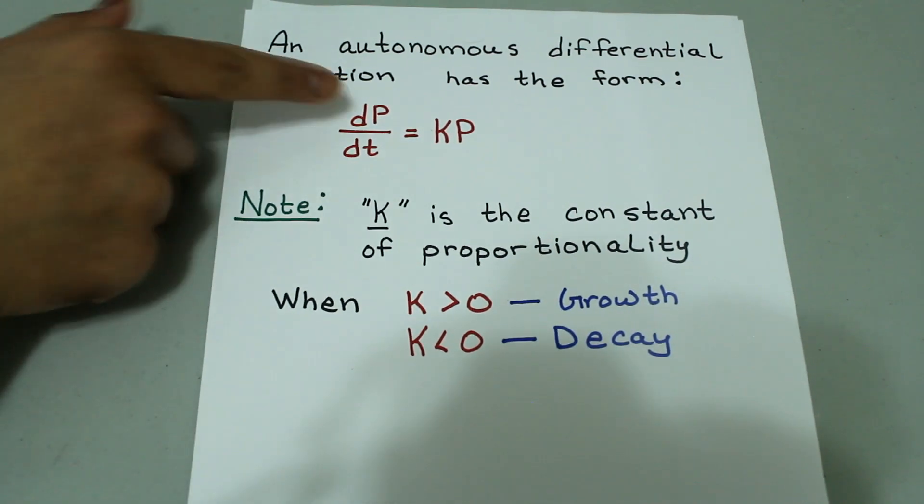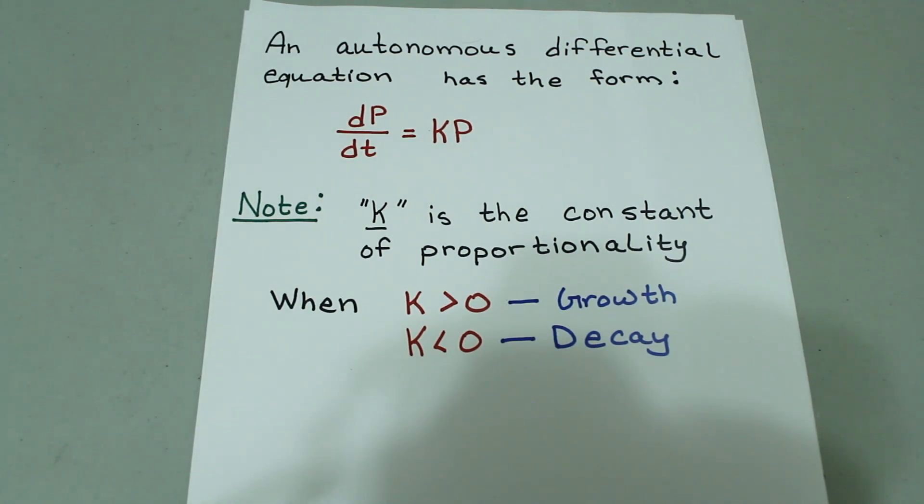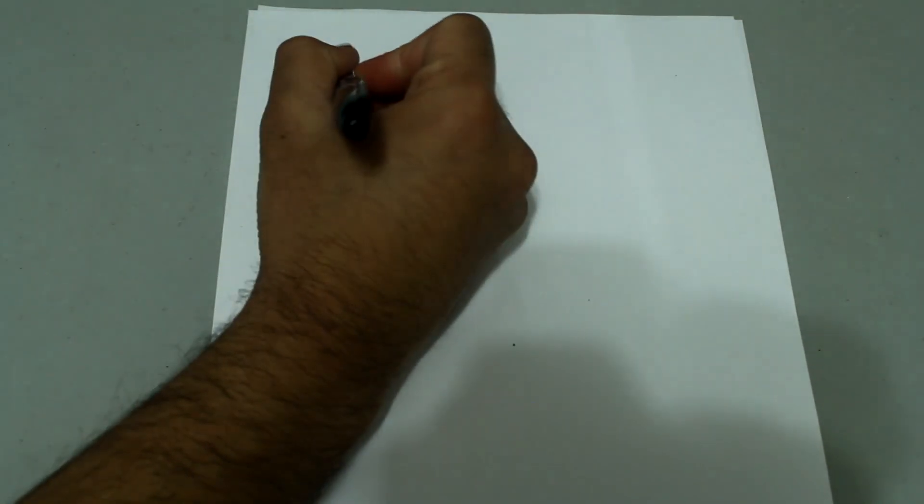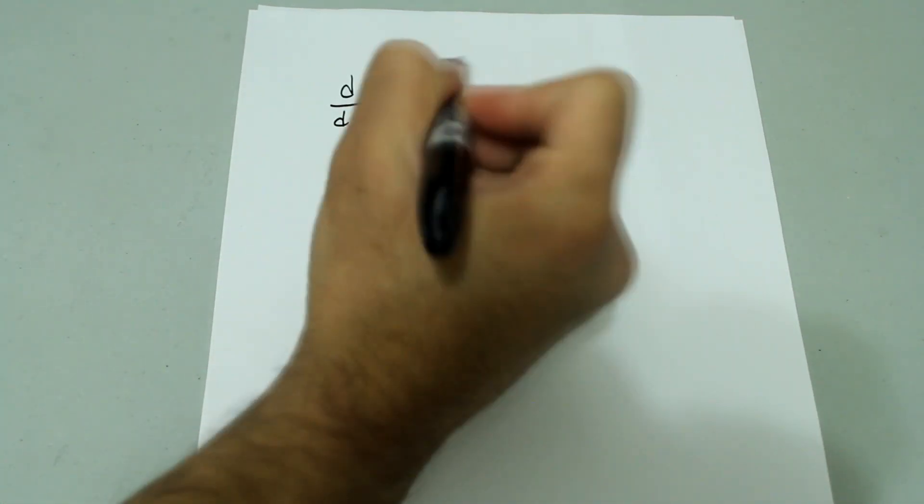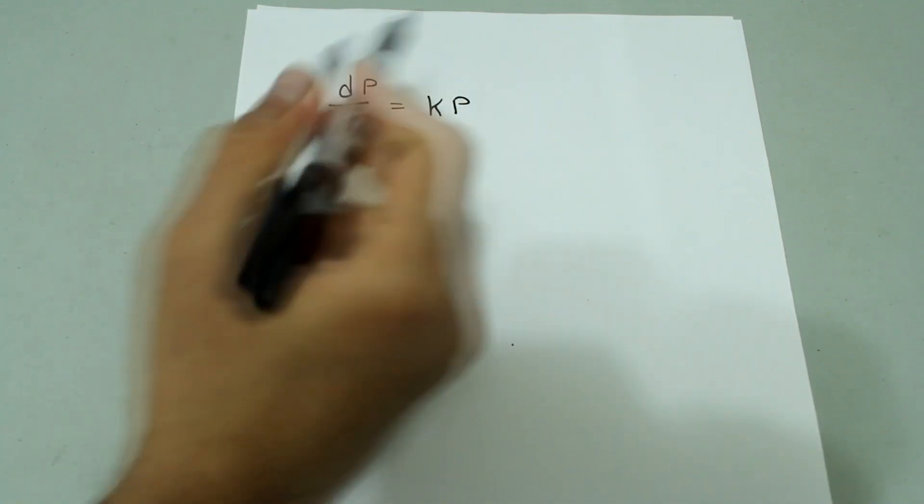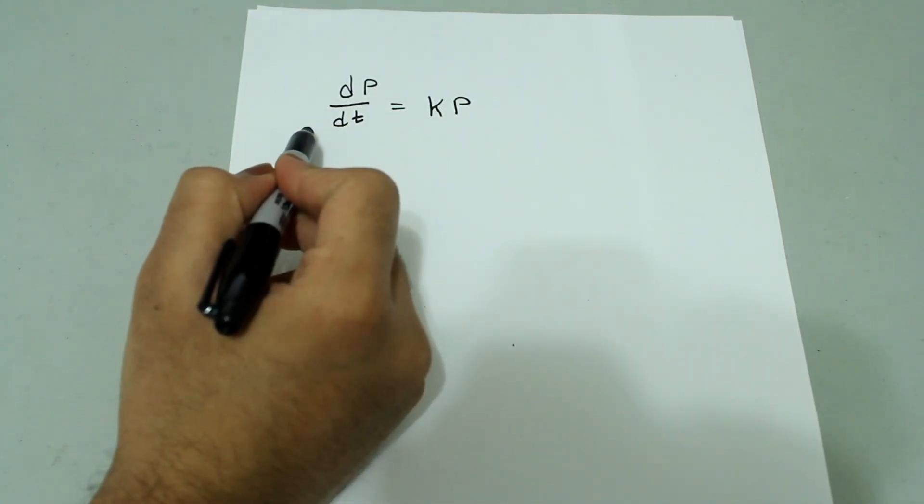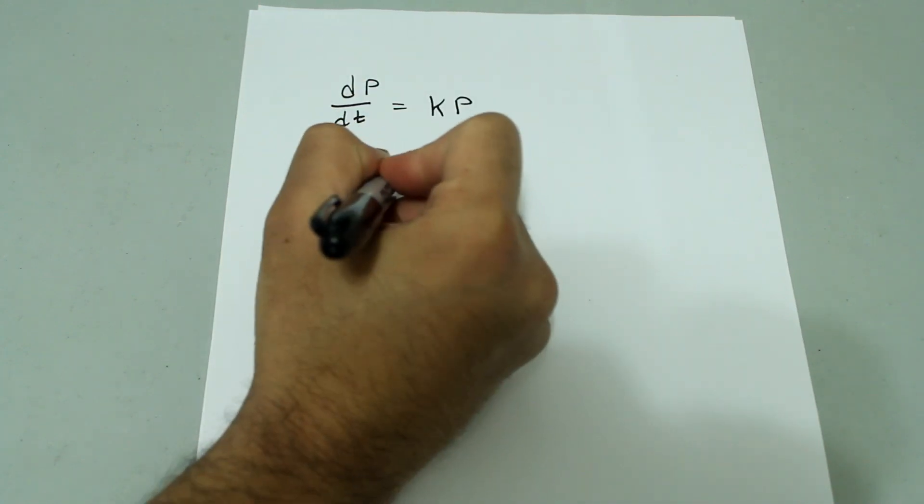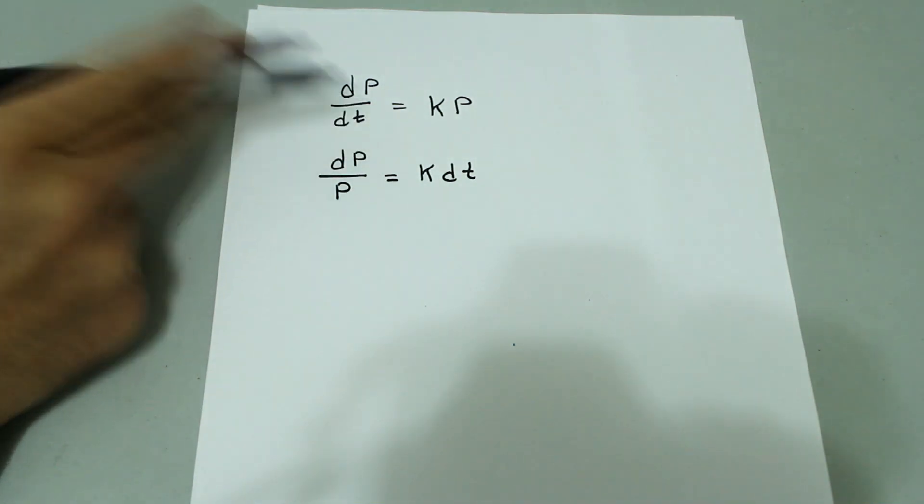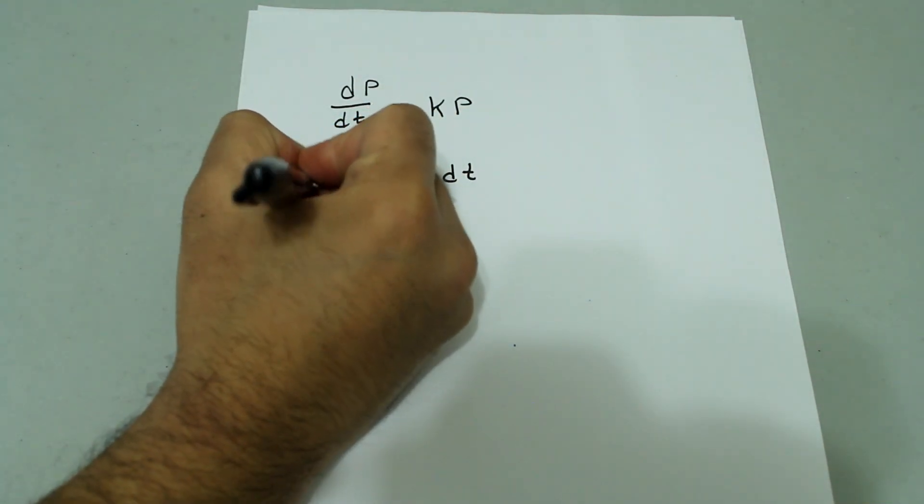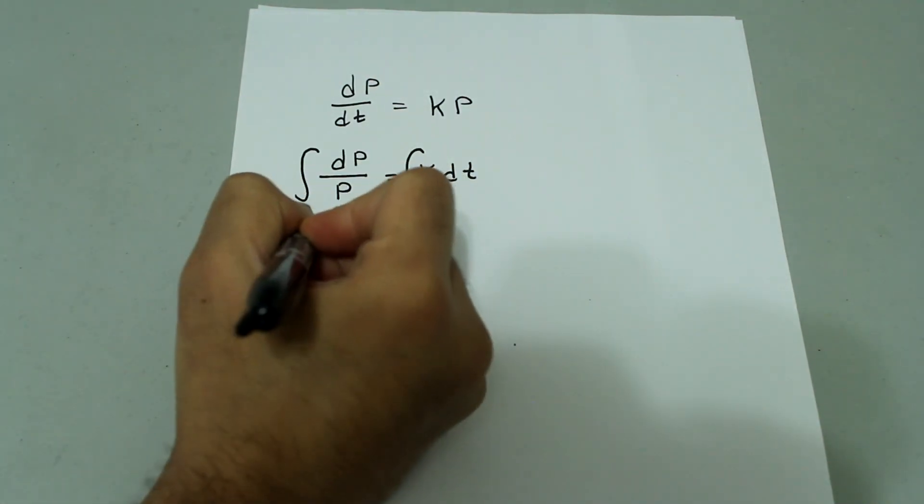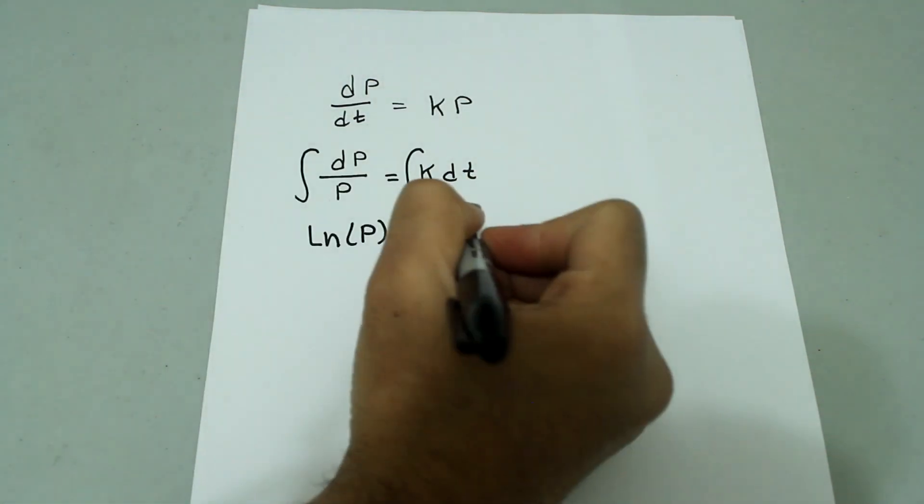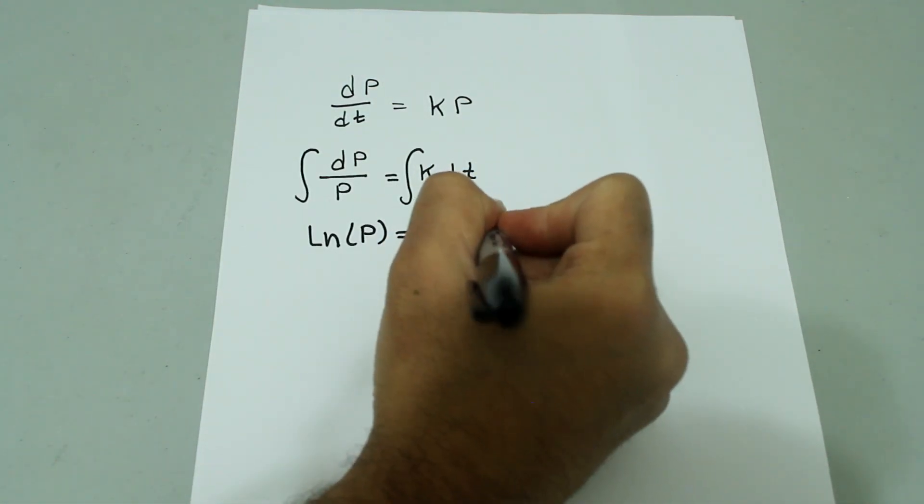Another thing to notice would be that this is a separable differential equation. We can integrate this quite easily. So let's say, for instance, we were to integrate this. Then we would do, I'll just rewrite it here, dP/dt equals kP. We can multiply both sides by dt and divide by P, so then we'll end up with dP/P equals k dt. And k is just a constant, right? So we can leave it that way and we can integrate both sides. Then this becomes natural log of P is equal to kt, and since we're integrating with respect to t, we'll just add the c on this side.